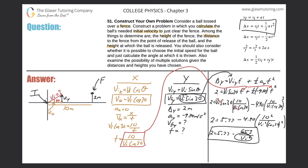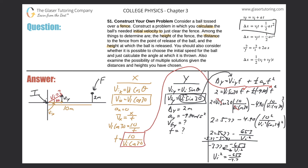Subtracting 5.77 from both sides: 2 minus 5.77 gives negative 3.77, which equals negative 653 over initial velocity squared. Switching numerator and denominator: initial velocity squared equals negative 653 divided by negative 3.77. Plugging into the calculator gives 173. So initial velocity squared equals 173. Taking the square root of both sides gives plus or minus 13.2 meters per second.